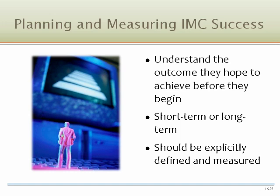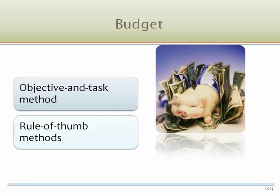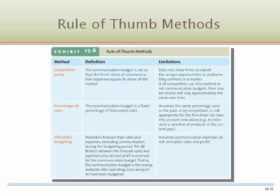As with any strategic undertaking, firms need to understand the outcome they hope to achieve before they begin. These goals can be short-term or long-term in nature and should be explicitly defined and measured. Firms use a variety of methods to plan their marketing communications budgets. The objective and task method determines the budget required to undertake specific tasks to accomplish communication objectives. Rule of thumb methods use prior sales and communication activities to determine the present communication budget, such as competitive parity, percentage of sales, or affordable budgeting. Although they are easy to implement, they obviously have various limitations.